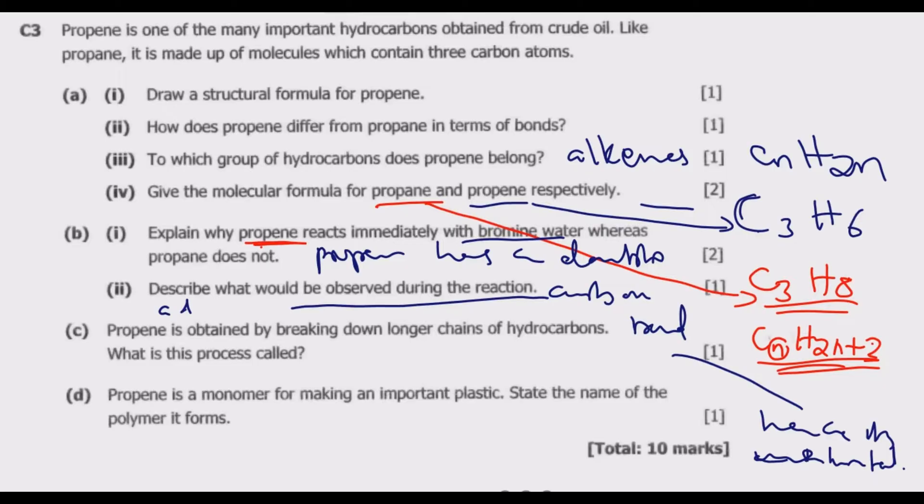Question (c): Propene is obtained by breaking down longer chains of hydrocarbons. What is this process called? This process is known as cracking, which is basically breaking down large or longer hydrocarbons, many of these alkanes, into alkenes.